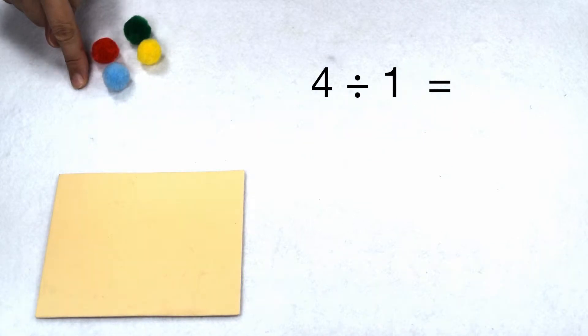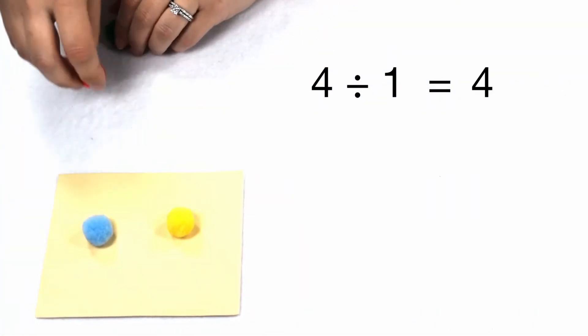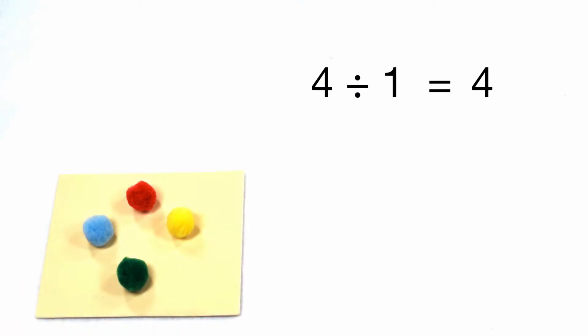If I want to put my four items into one group, that means everything gets moved into that one group. So four divided by one gives me four.